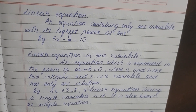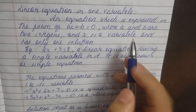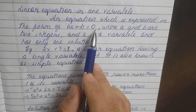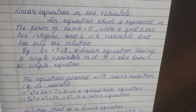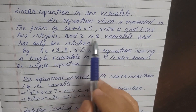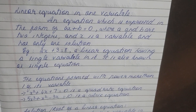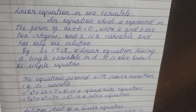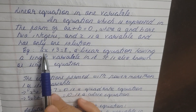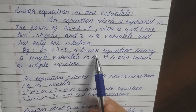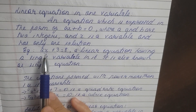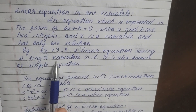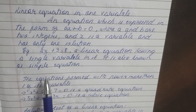Now we are going to deal more with linear equations in one variable. An equation which is expressed in the form of ax plus b equals c, where a and b are two integers — integers meaning whole numbers including 0, positive numbers, and negative numbers — and x is a variable and has only one solution. For example, 2x plus 3 is equal to 8. It is a linear equation having a single variable — only x, no y or z. This is also called a simple equation.